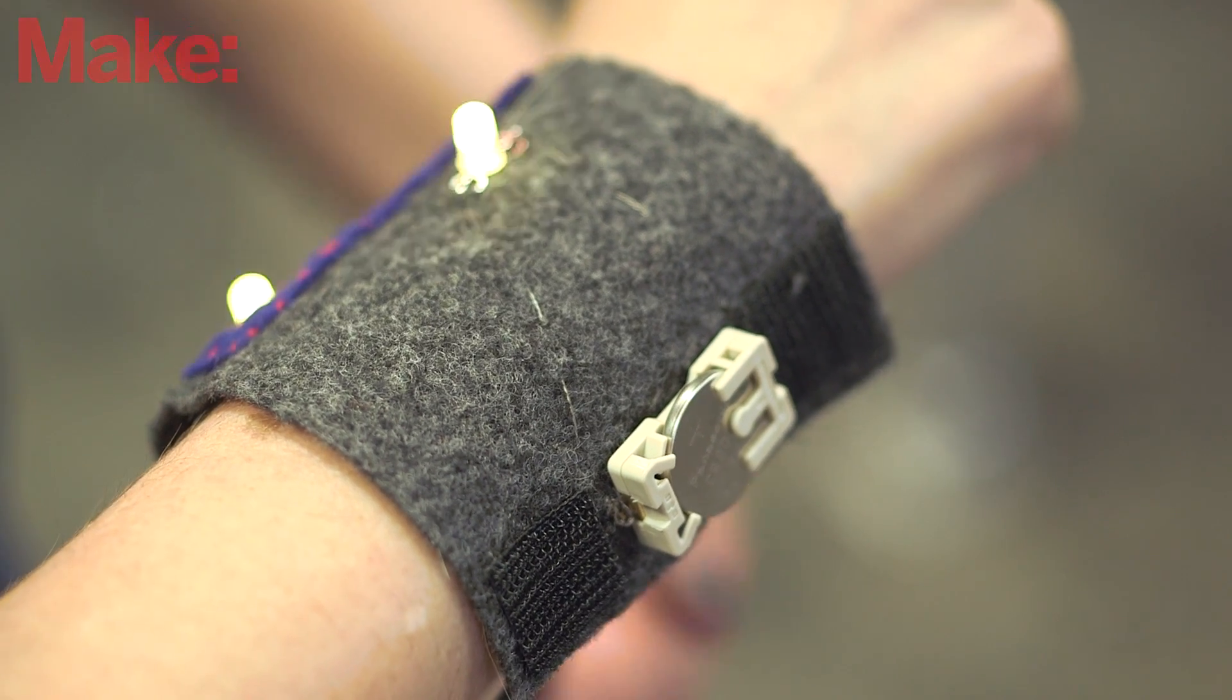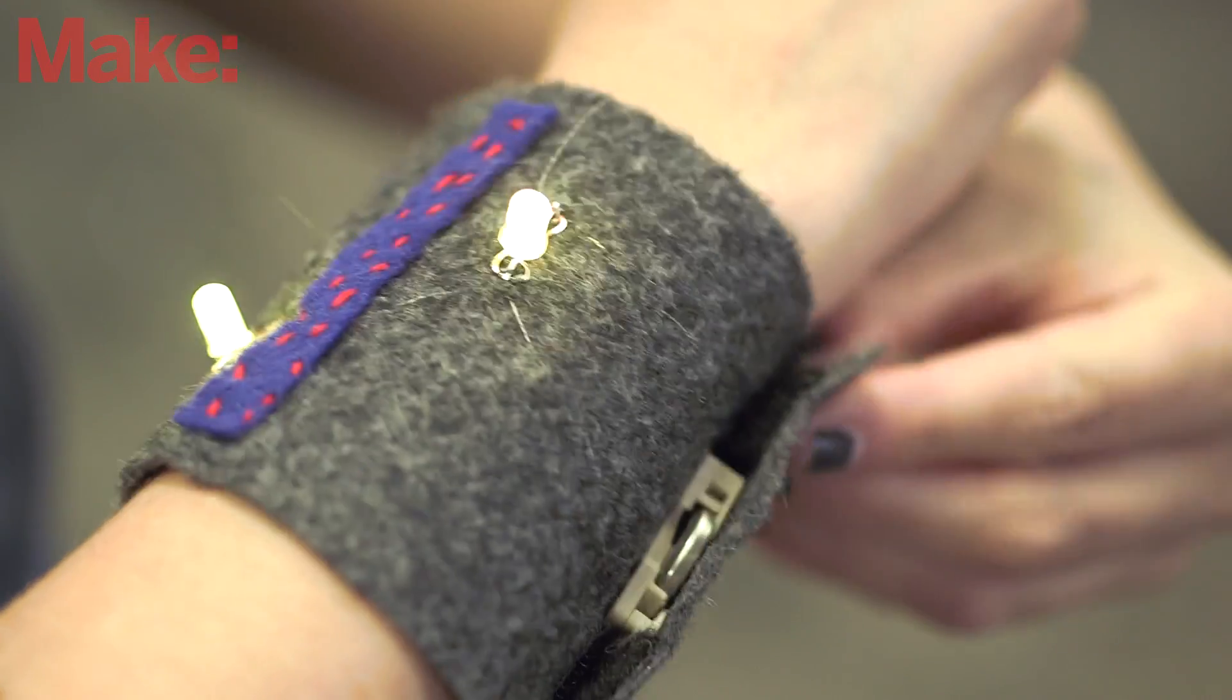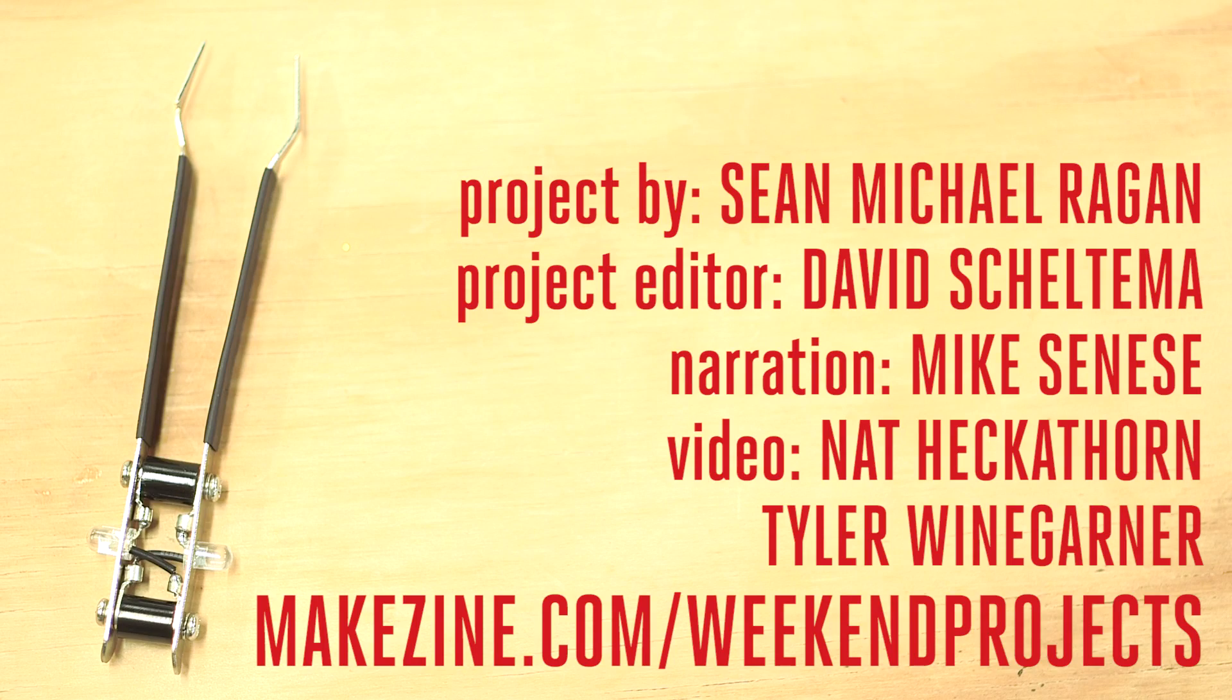This tool makes quick work of sorting the most fiddly and difficult to wrangle batteries. Whether you're making a soft circuit or an LED throwy, the fussy button cell will no longer hold you back. Let us know what you make using small 3 volt batteries in the comments below.